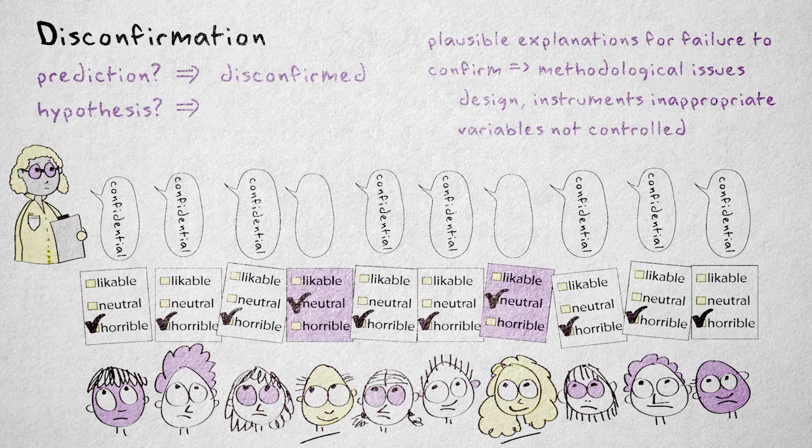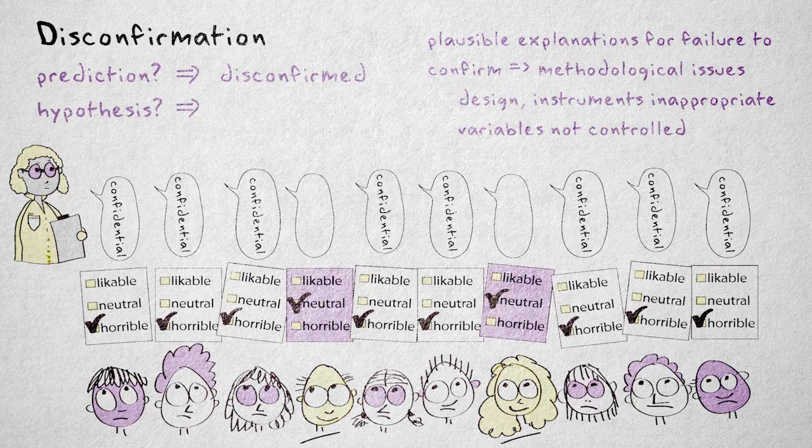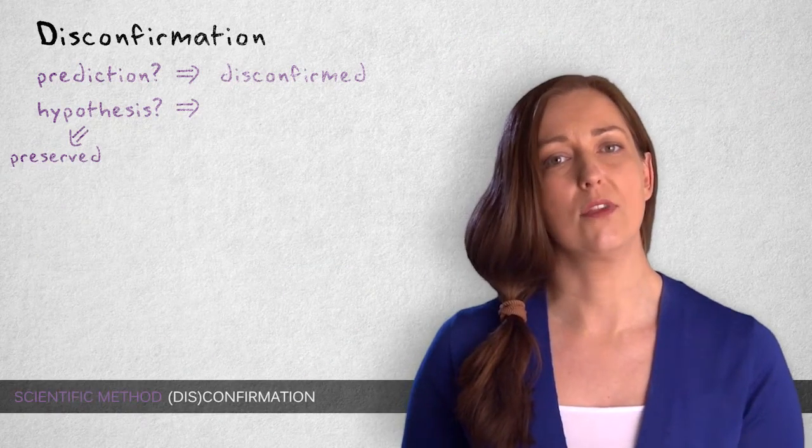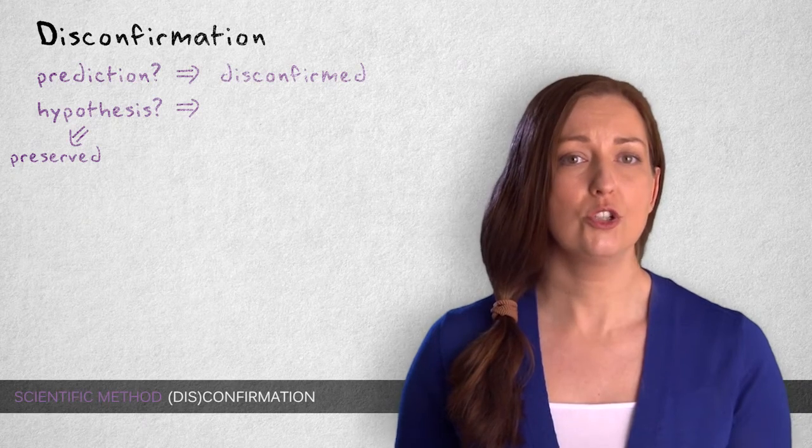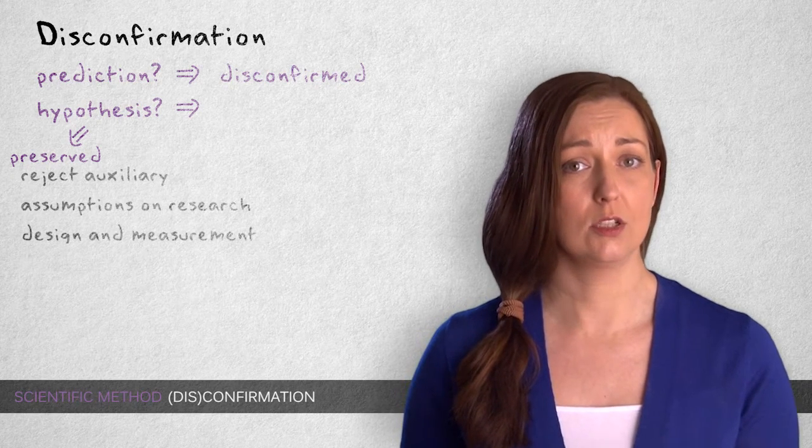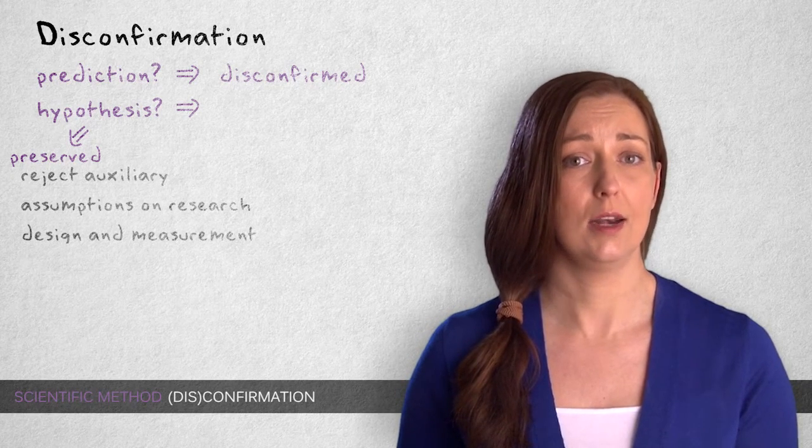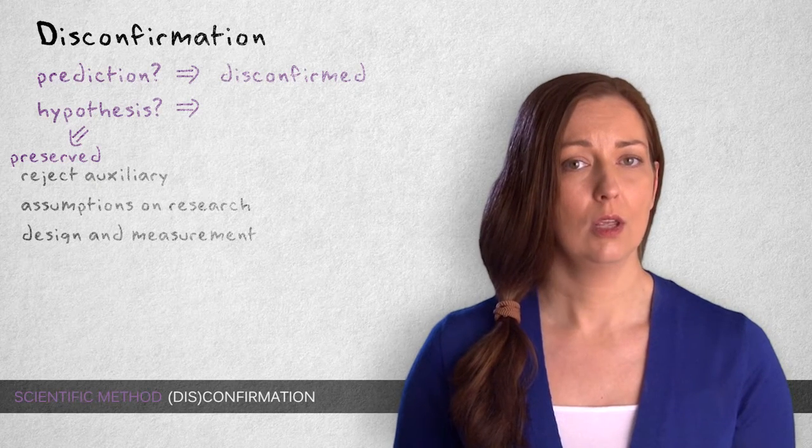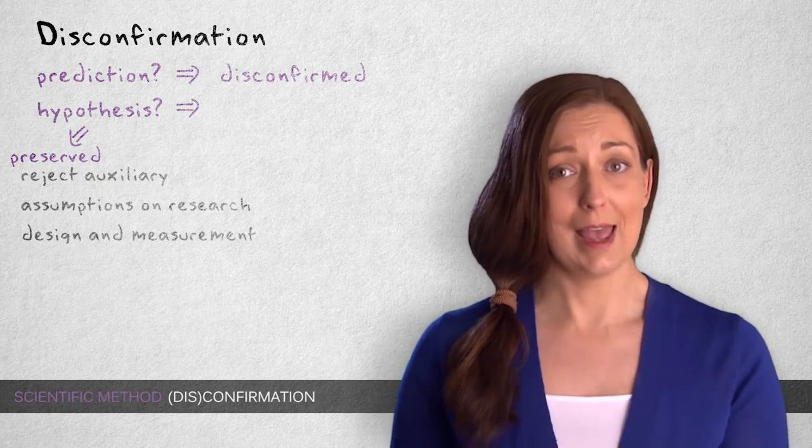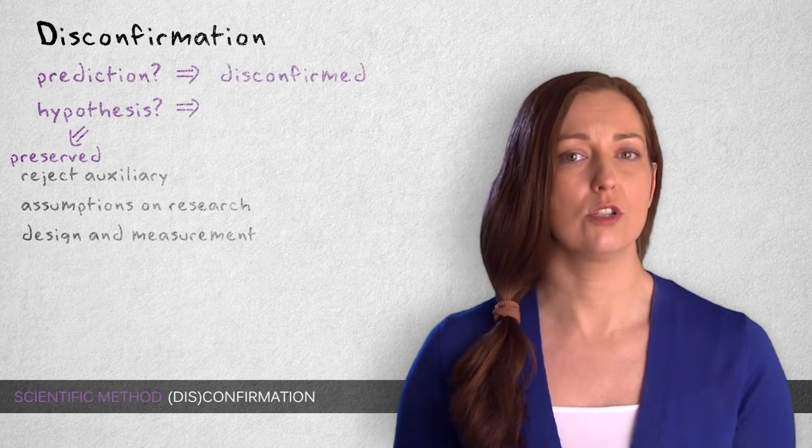If there are plausible methodological explanations for the failure to confirm, we preserve the hypothesis and instead choose to reject the auxiliary implicit assumptions concerning the research design and the measurement. We investigate the original hypothesis again, only with a better research setup.